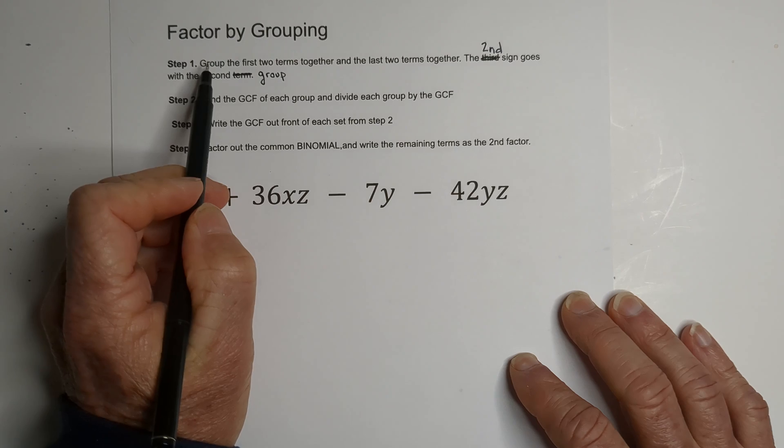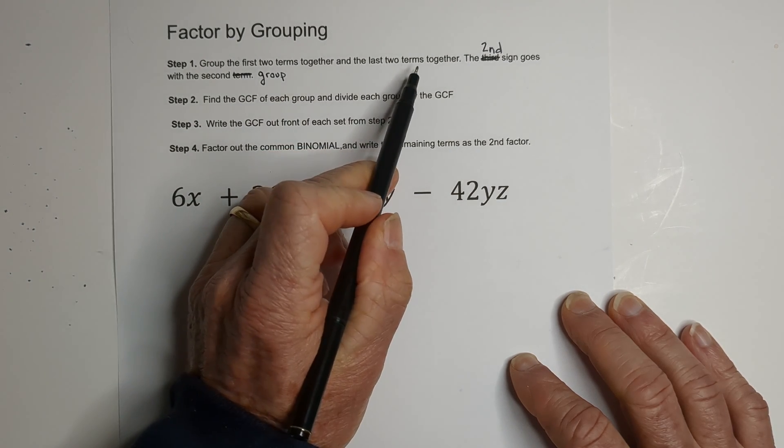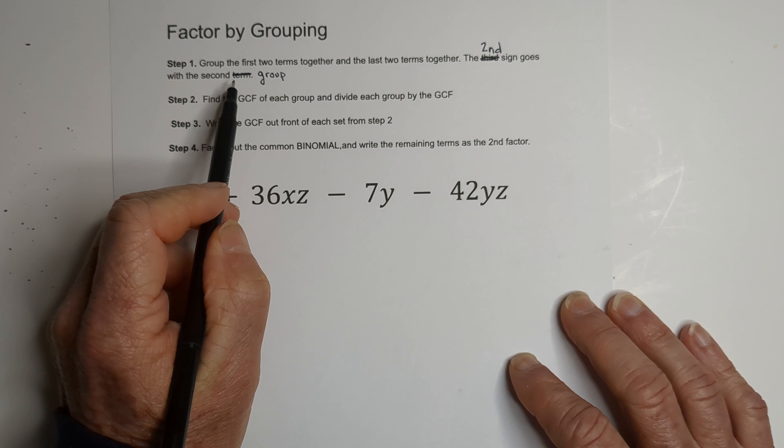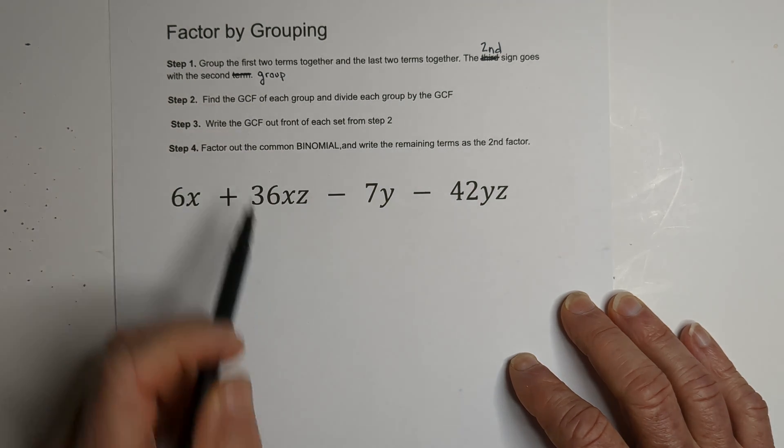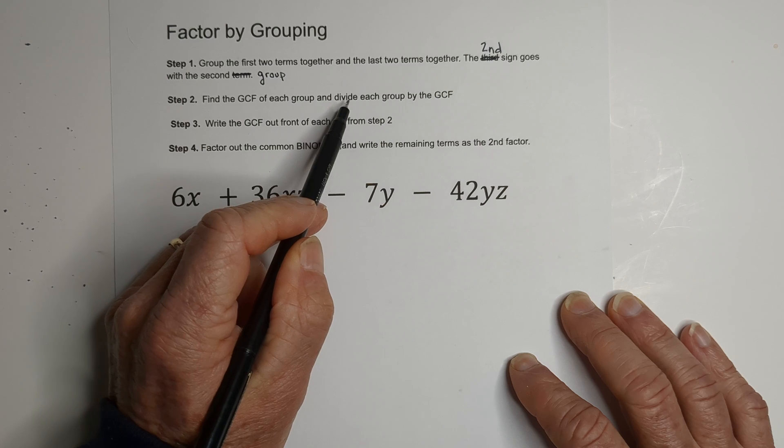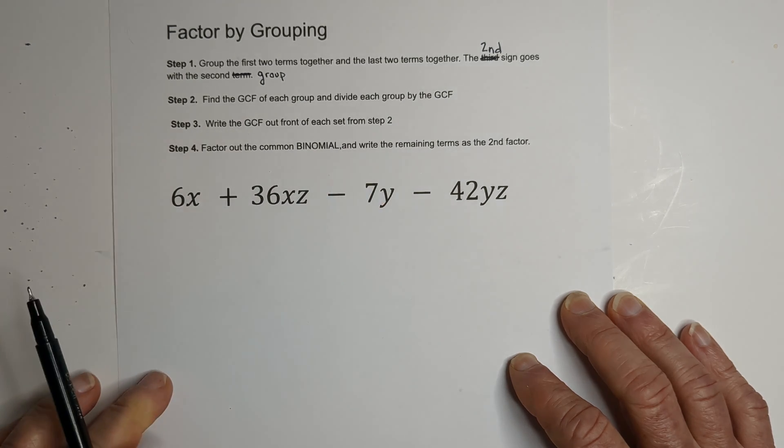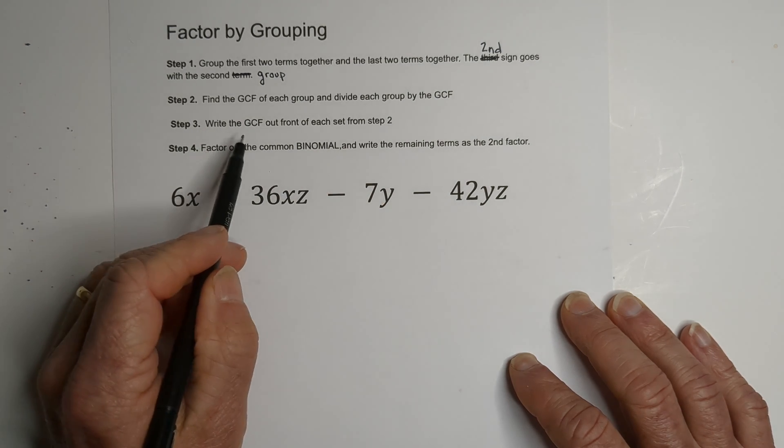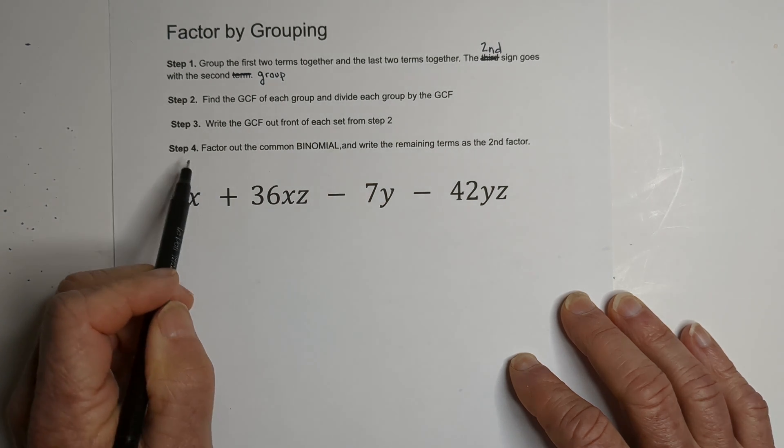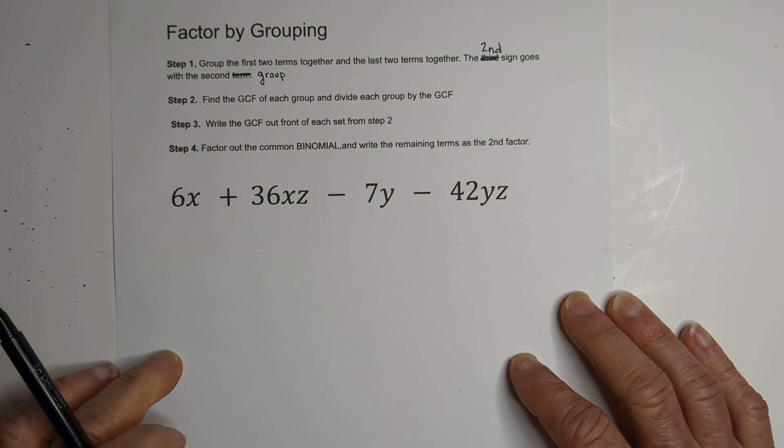So here's what we're going to do. We're going to group the first two terms together, last two terms together, and the second sign goes with the second group. Then we're going to find the GCF of each group and divide each group by the GCF. Then we're going to write the GCF out front of each set from step two, and then we'll factor out a common binomial and write the remaining terms as the second factor.